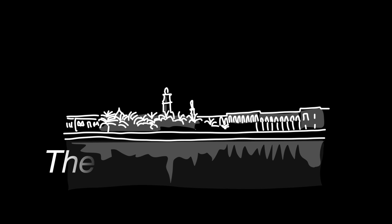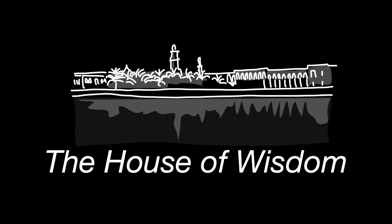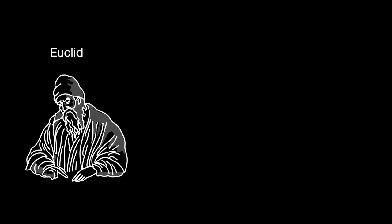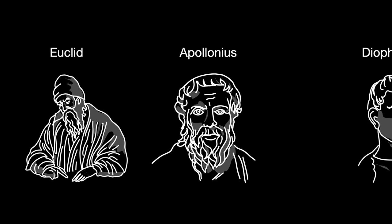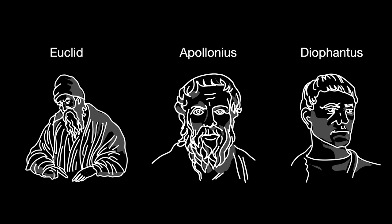In Baghdad, a library called the House of Wisdom was founded. It housed texts from various cultures, including works by Greek mathematicians like Euclid, Apollonians, and Diophantos, as well as Indian scholars like Brahmagupta.